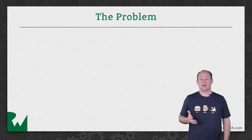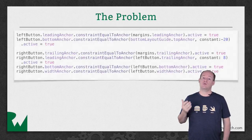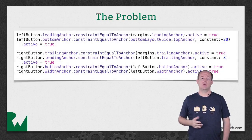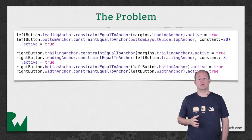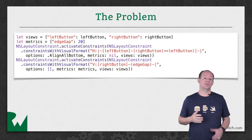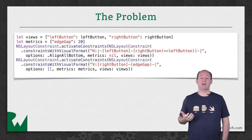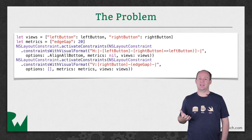Even though the new NSLayoutAnchor syntax makes Auto Layout code more readable, you still have to write many lines of code to create all the constraints necessary for your layout. The Visual Format Language is a way to create many constraints, possibly involving many views at the same time. It does that by using a syntax sort of like ASCII art.